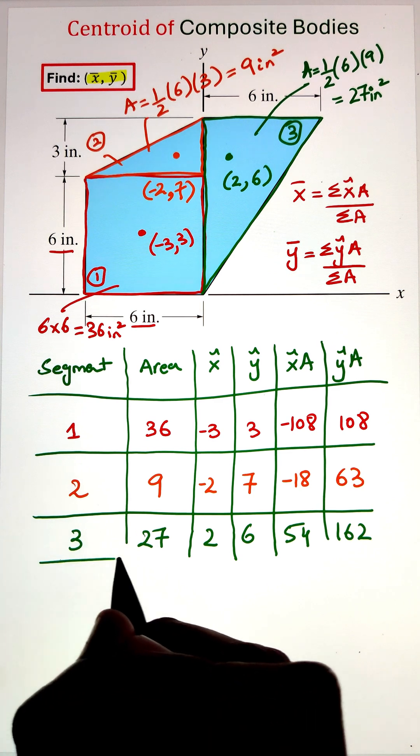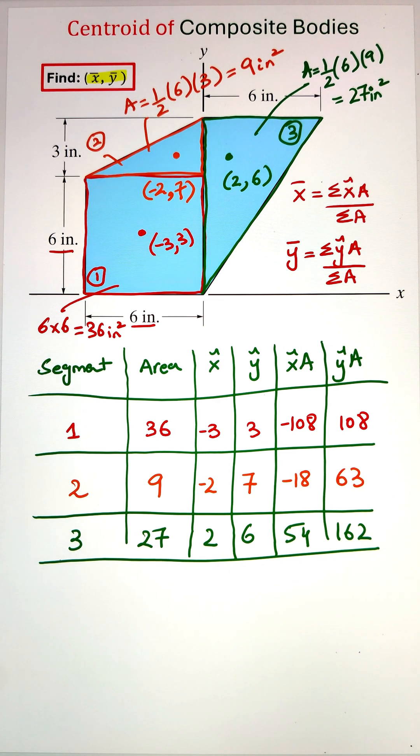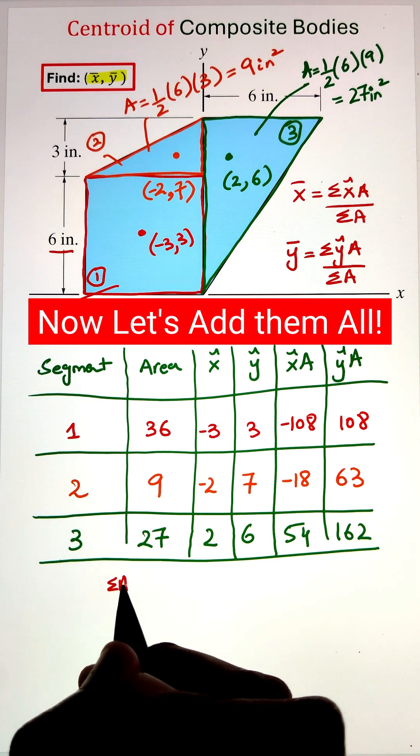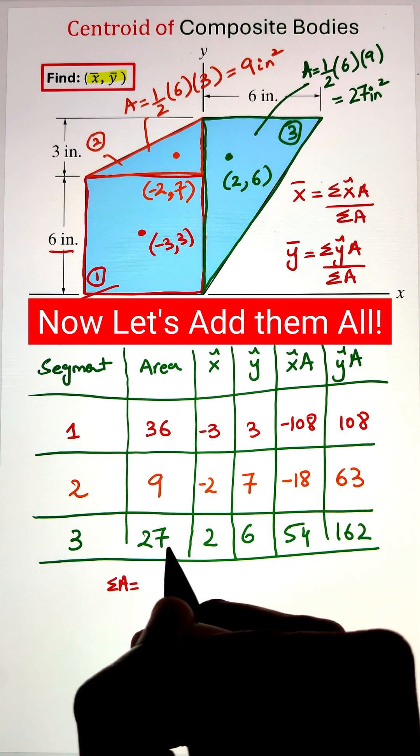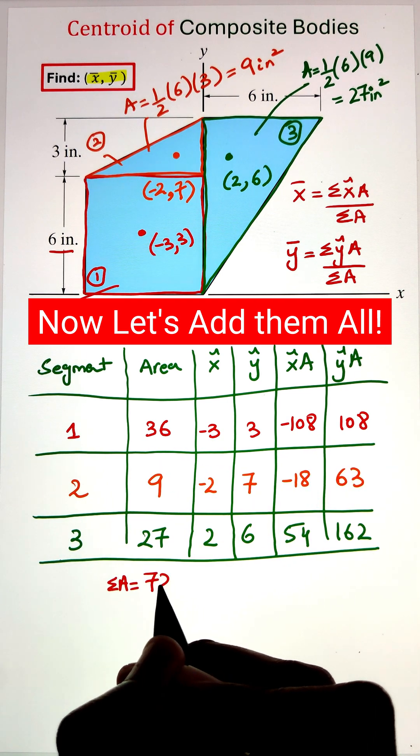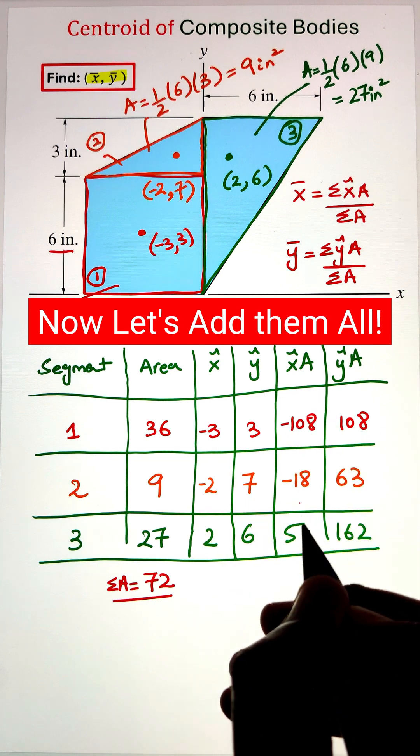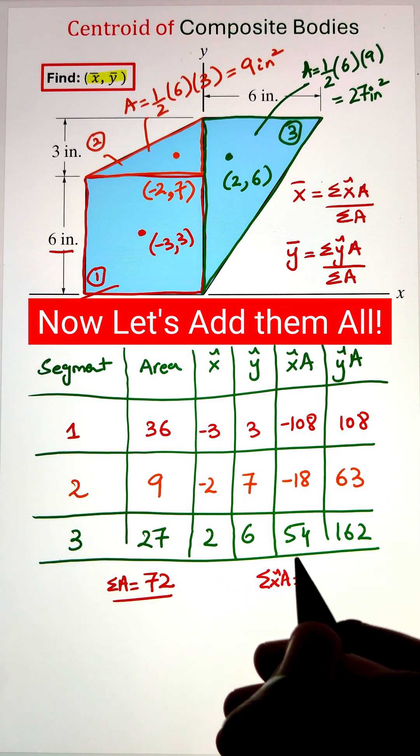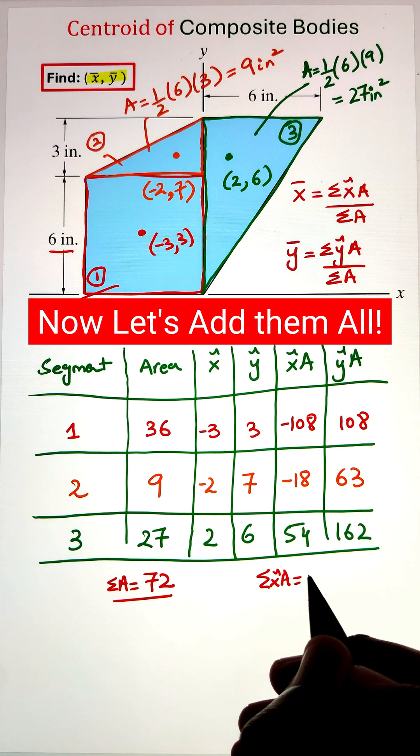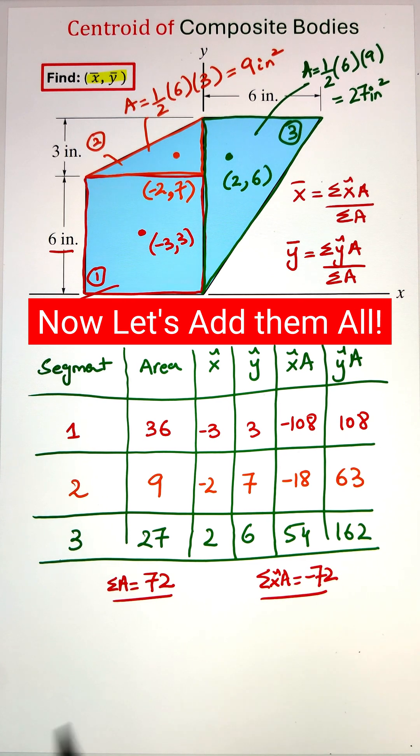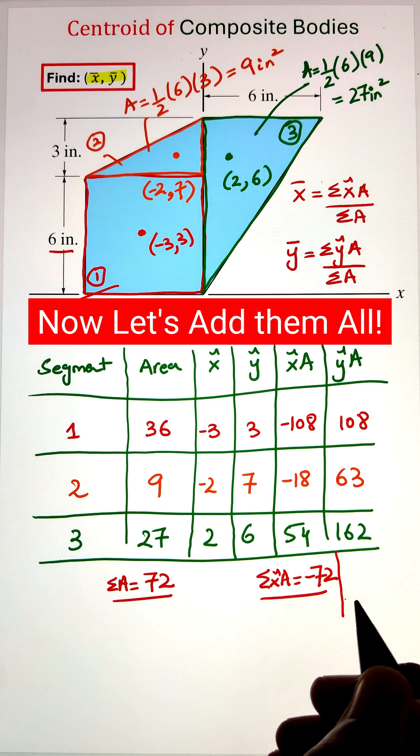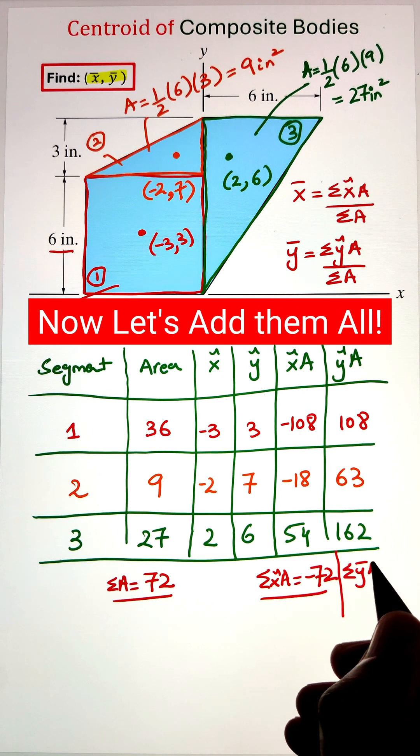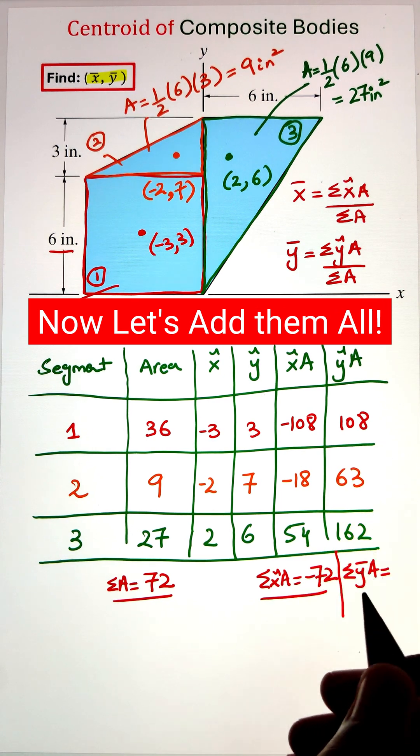Now finally, we can go ahead and add all three areas: 36 + 9 + 27 = 72 square inches. Whereas if we add our component of x'A for all three segments, that is coming to -72. The value of addition of all the y'A is 333.